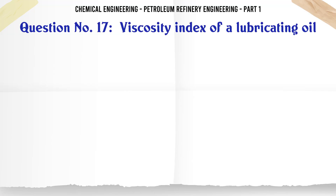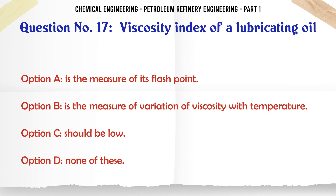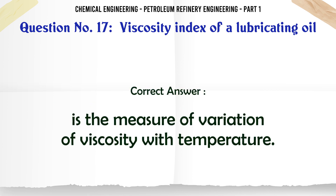Viscosity index of a lubricating oil: A. Is the measure of its flash point, B. Is the measure of variation of viscosity with temperature, C. Should be low, D. None of these. The correct answer is: it is the measure of variation of viscosity with temperature.